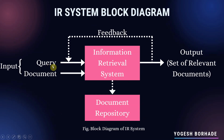There are three main components in this system. First is the input, second one is the IRS or you can call it the processor, and third one is the output.